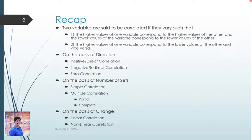We also studied types of correlation. Correlation is classified on the basis of direction, on the basis of number of sets, and on the basis of change. On the basis of direction we have positive correlation or direct correlation, negative correlation or indirect correlation, and zero correlation. On the basis of number of sets, we have simple correlation and multiple correlation. Under multiple correlation there are two types: partial and complete correlation. On the basis of change, there are two types: linear correlation and non-linear correlation.